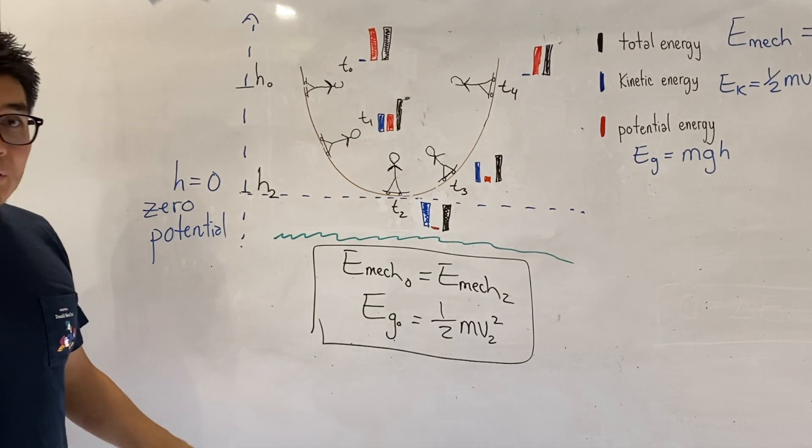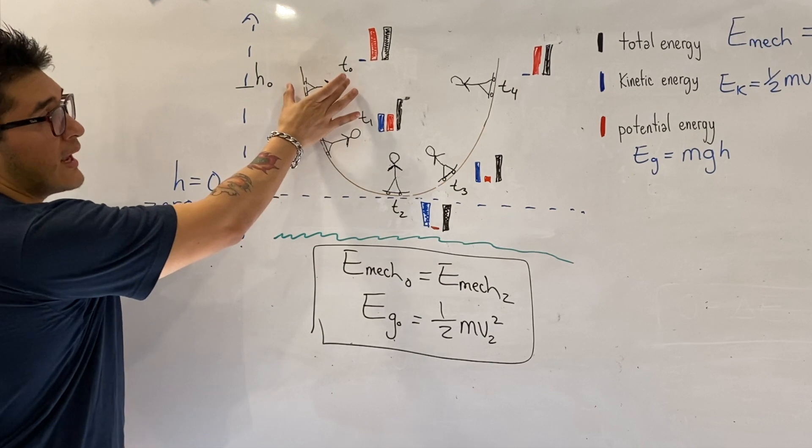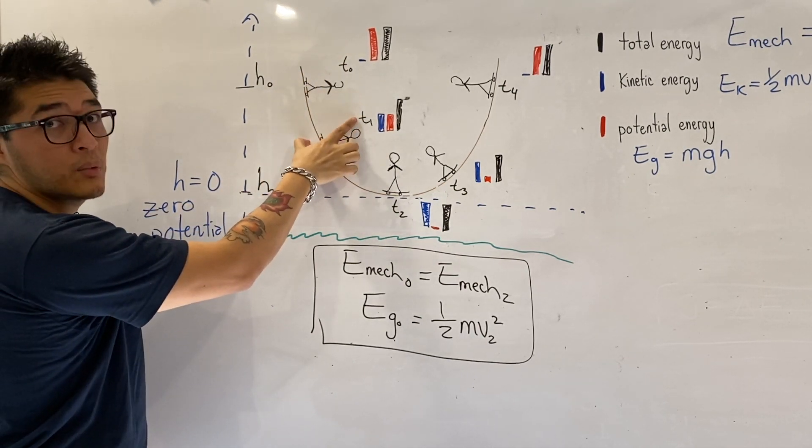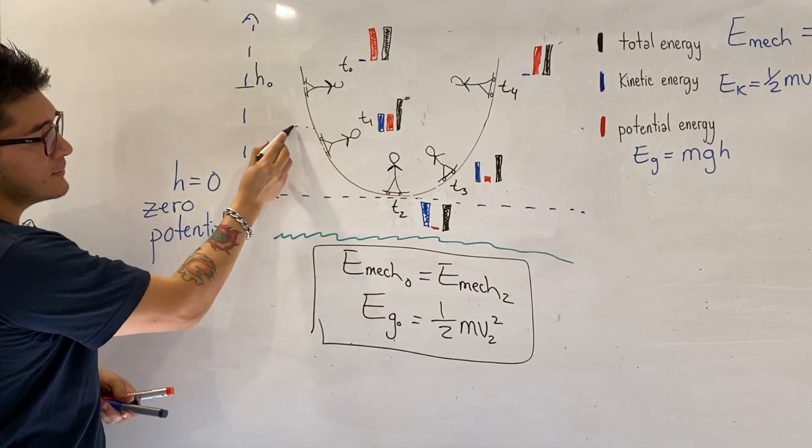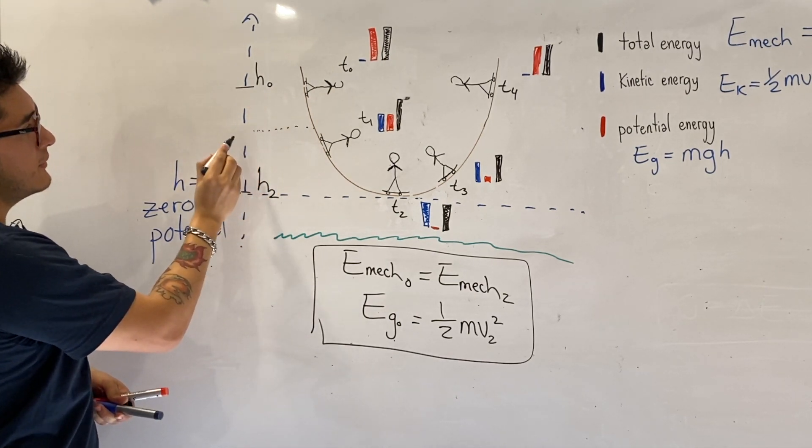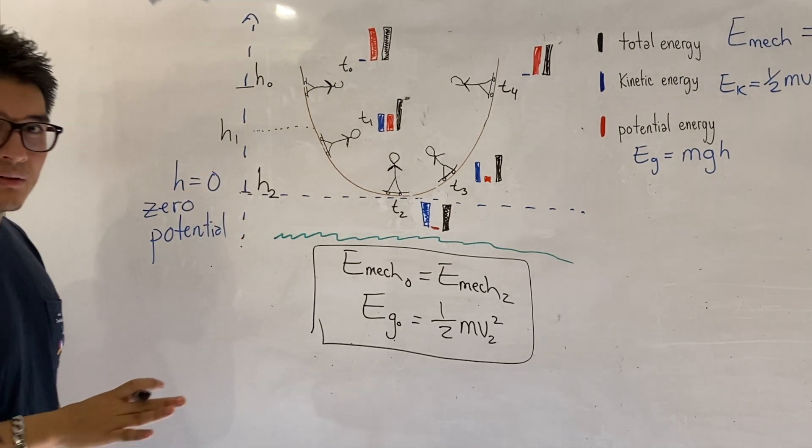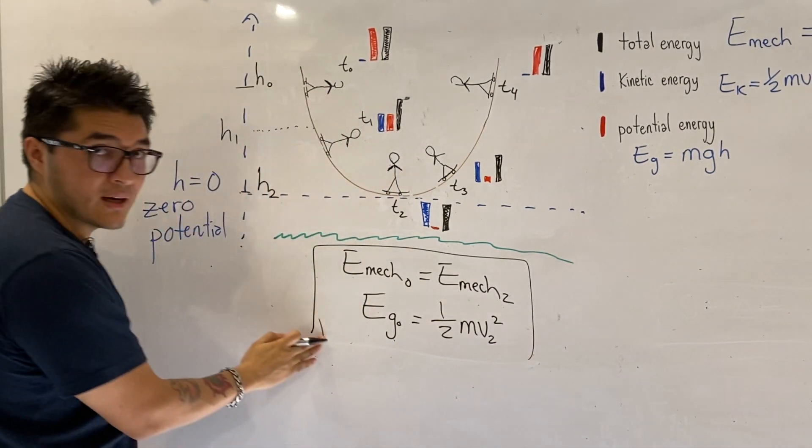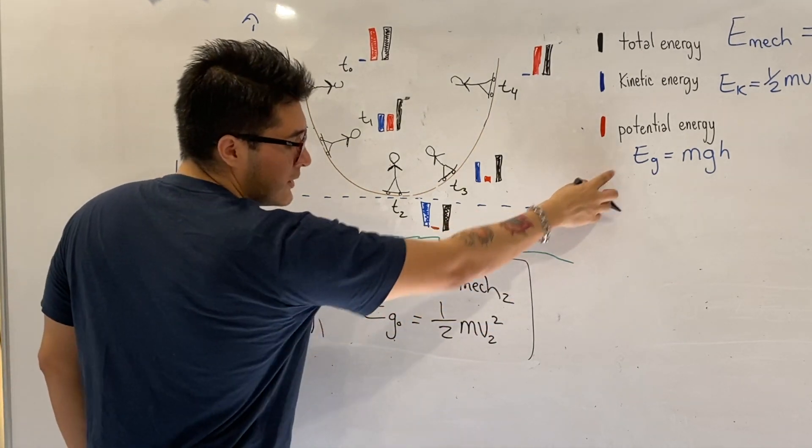But you could consider other cases. Let's say you were interested in the mechanical energy from the initial position to the mechanical energy at time one. At time one, we can call this height h1. Oh, you know what? I made a little mistake, so I apologize. I should have taken this a bit further. I apologize. This, I should have simplified it into its equation form.